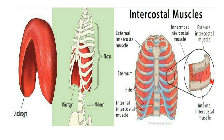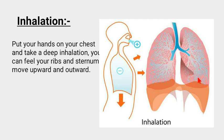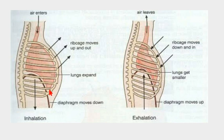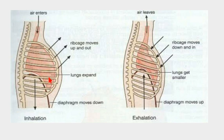Put your hands on your chest and take a deep inhalation — you will feel your ribs and sternum, which is the breast bone, move upward and outward. During inhalation, the rib cage moves up and out, so the chest cavity increases and the volume of the lungs increases. The diaphragm also contracts and moves downward, it flattens during inhalation, providing maximum area for the lungs to expand inside the chest cavity.